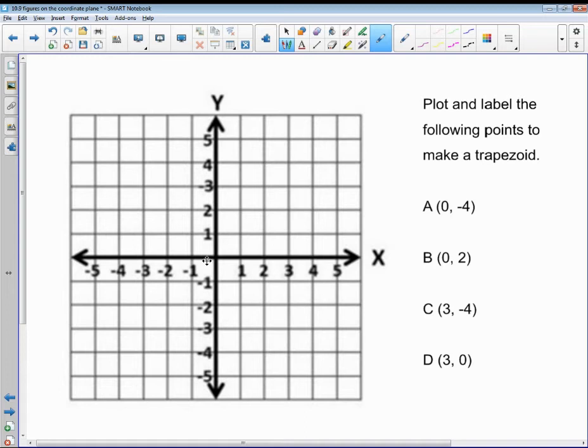So the first thing we want to do is look at our ordered pairs. Zero, negative four. So I won't be going over at all. I'll be going down to negative four. Because remember, this is x and this is y.